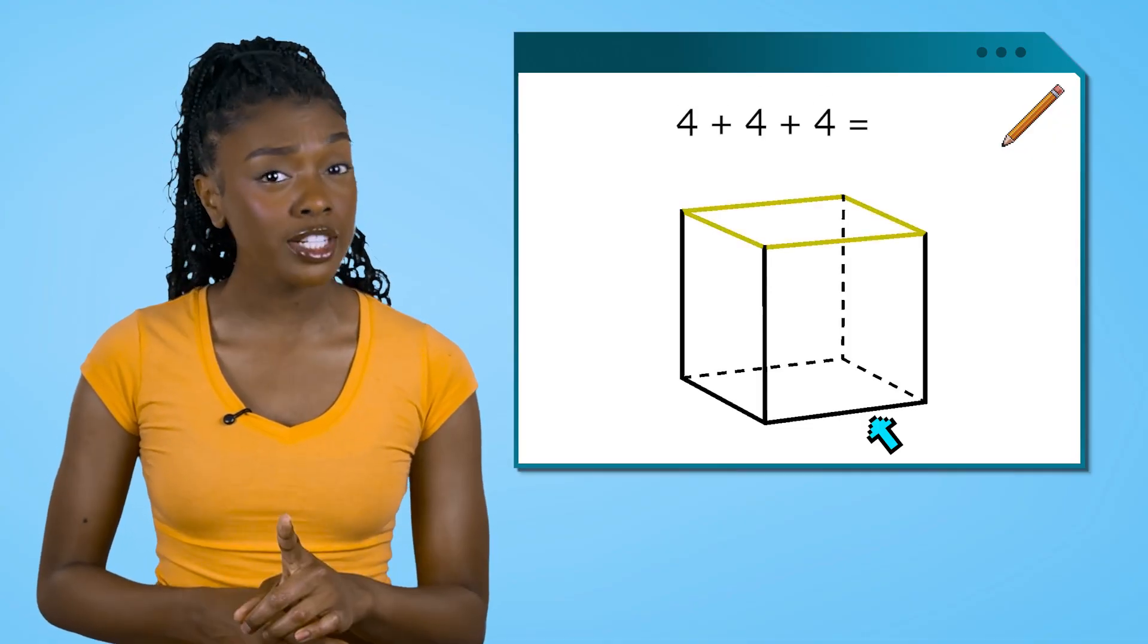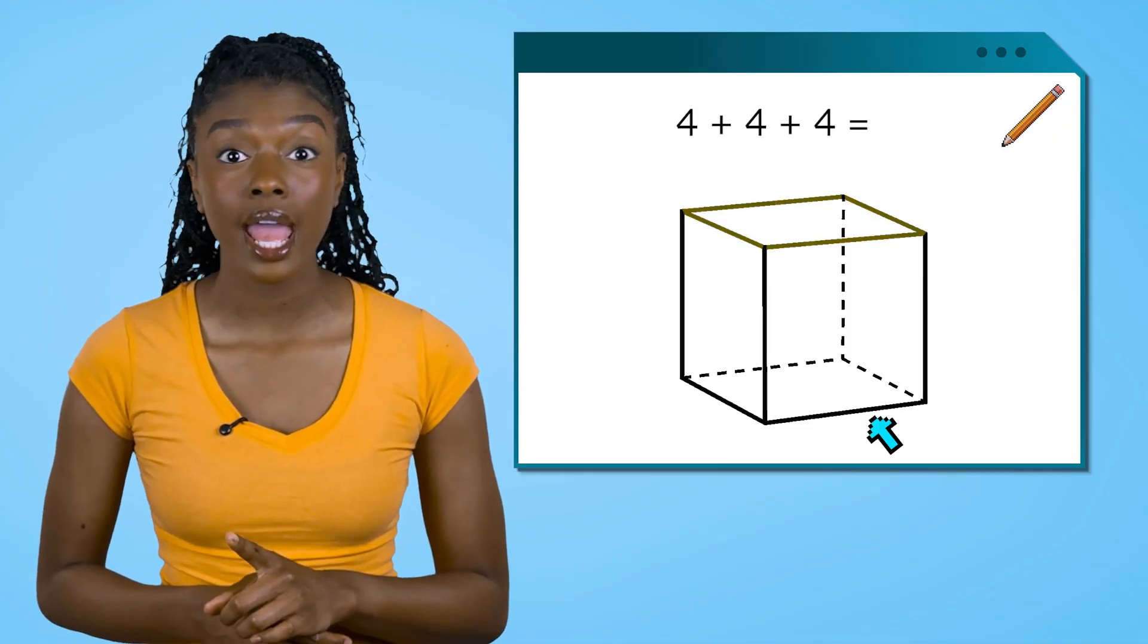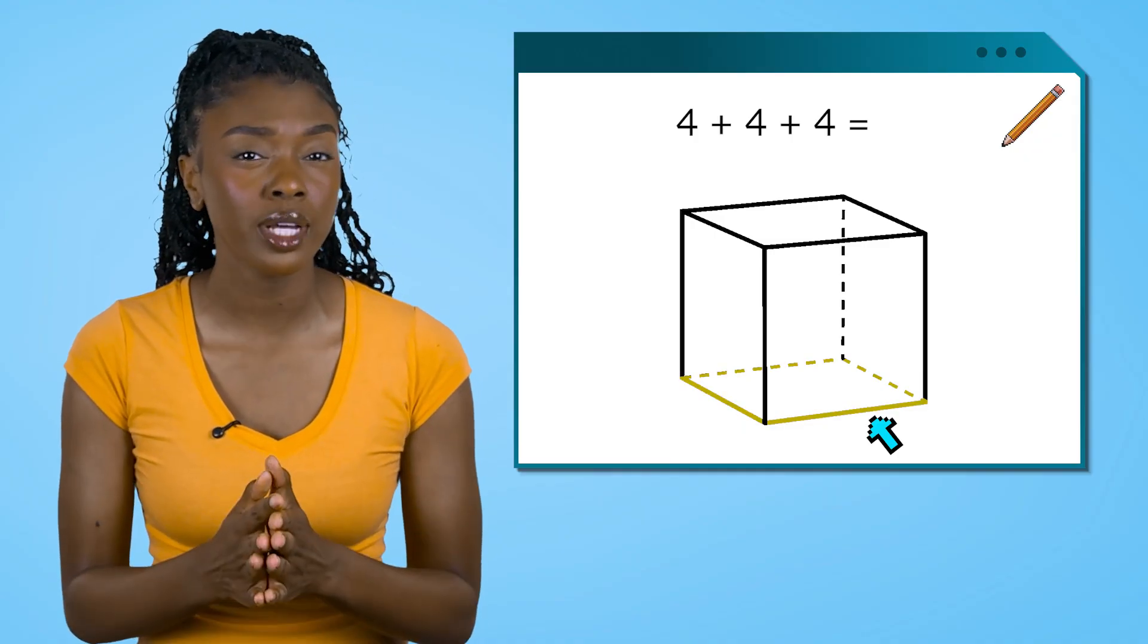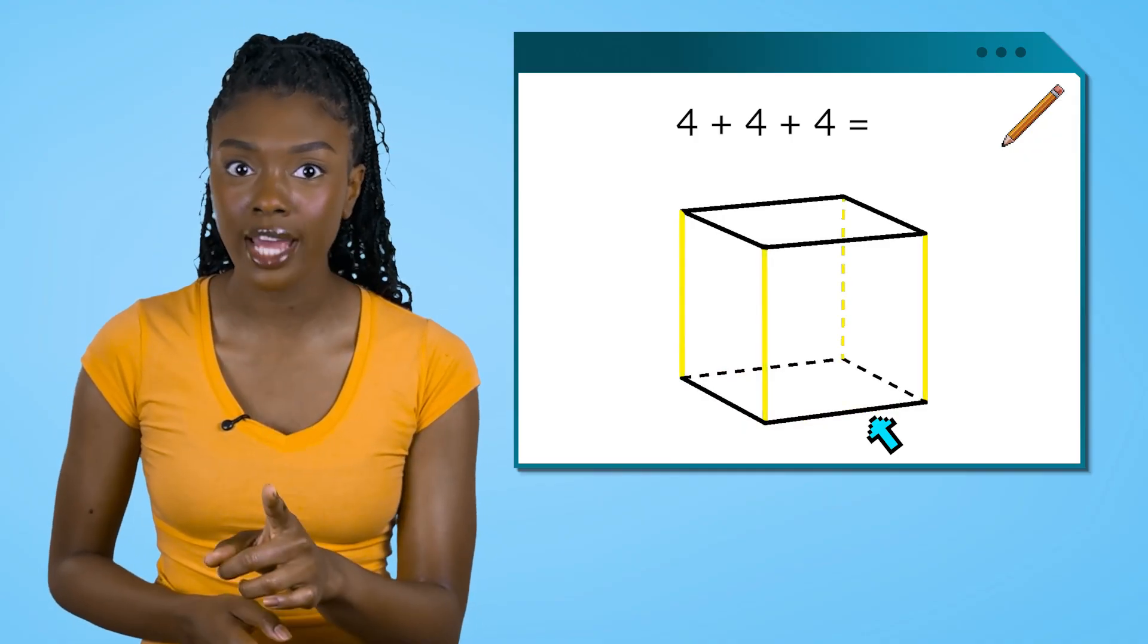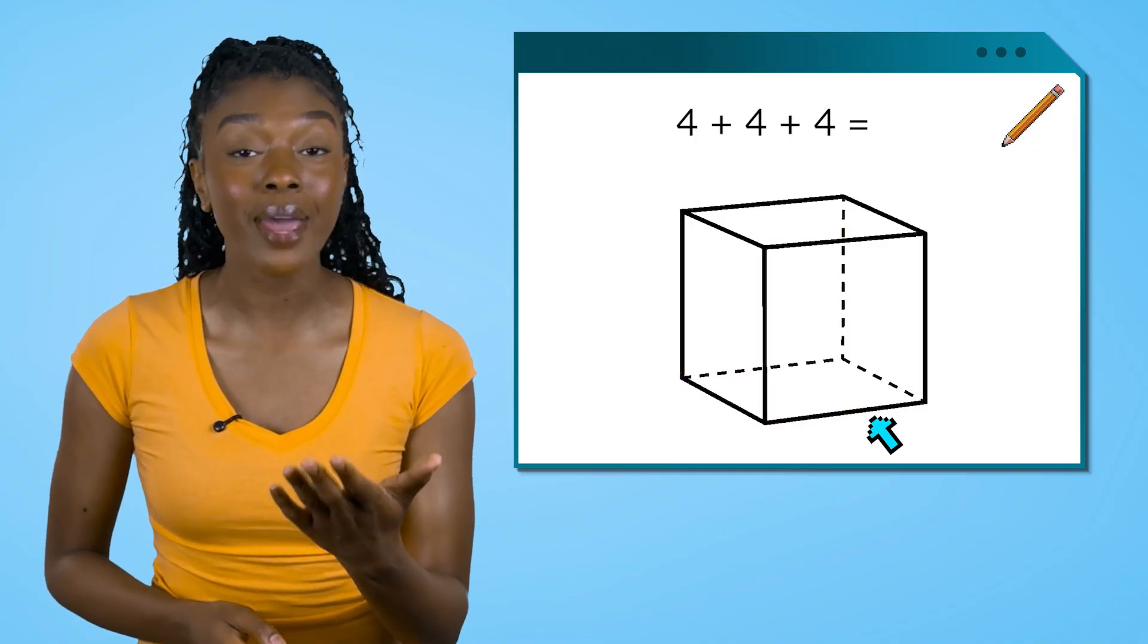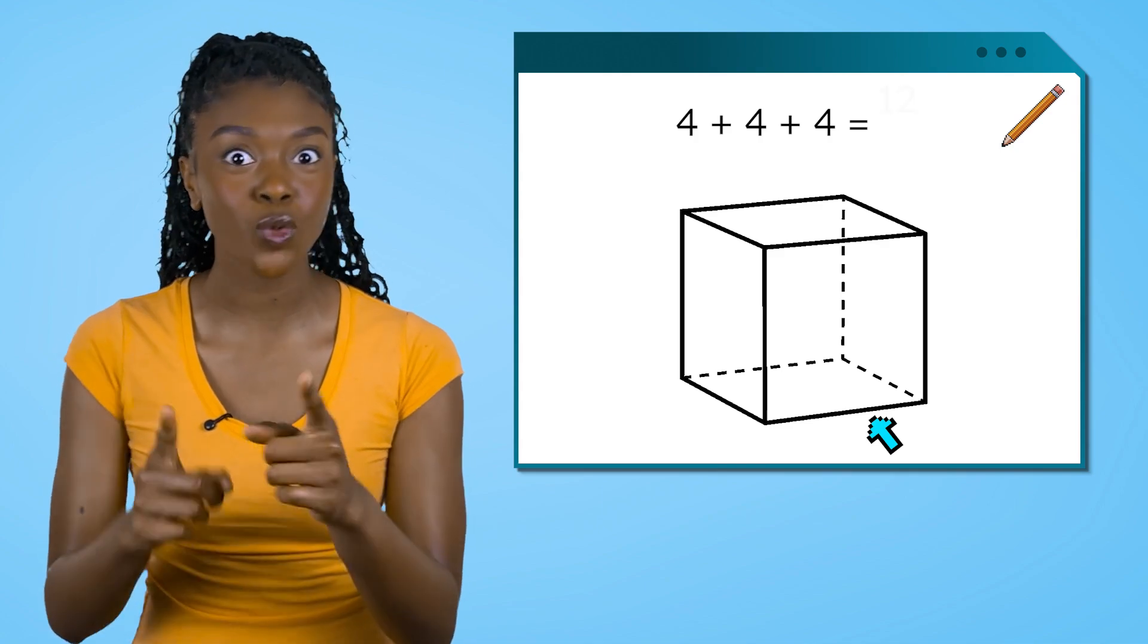Let's count them together. There are 4 edges around the top of the cube and 4 edges around the bottom of the cube. Plus, there are 4 more edges around the cube,